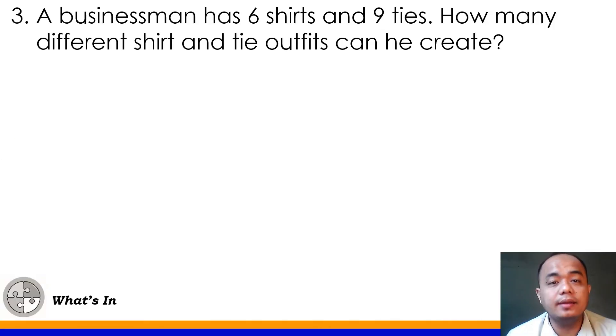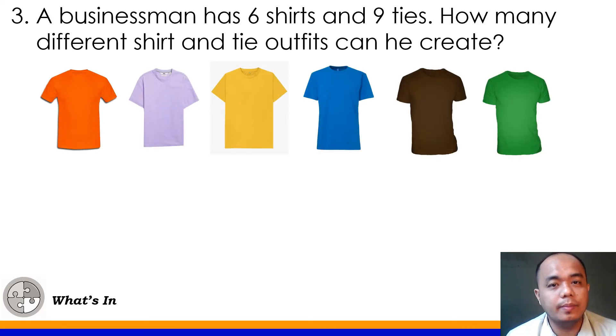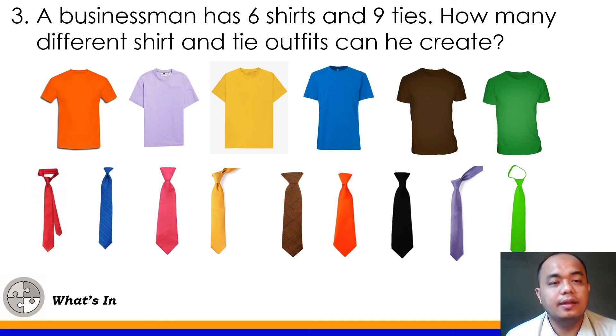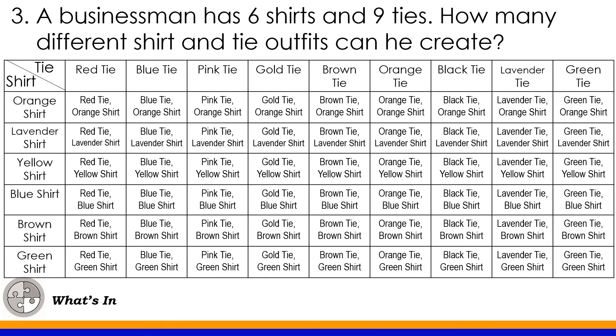Number 3, a businessman has 6 shirts and 9 ties. How many different shirt and tie outfits can he create? Now ito yung mga halimbawa ng mga shirts na class. 6 yan at saka 9 ang mga ties niya. Now para masolve natin yung number 3, gagamit tayo ng table or grid. Ito yung pwede mong magamit ng solution class para masolve yung number 3. Now again, this is a tabular form or table or tinatawag din nating grid. As you see here, meron tayong different types of tie dito sa may column natin at saka yung row natin ay ang different kinds of shirts.